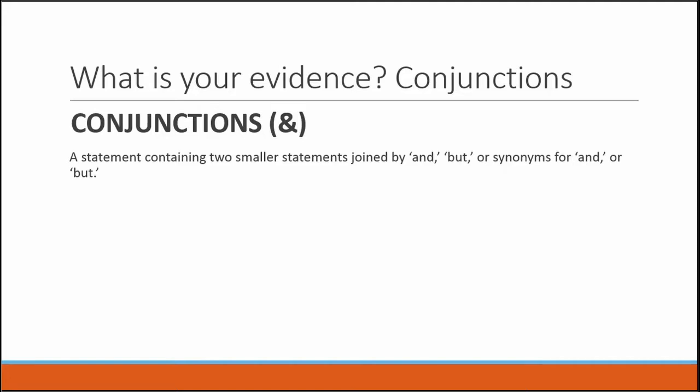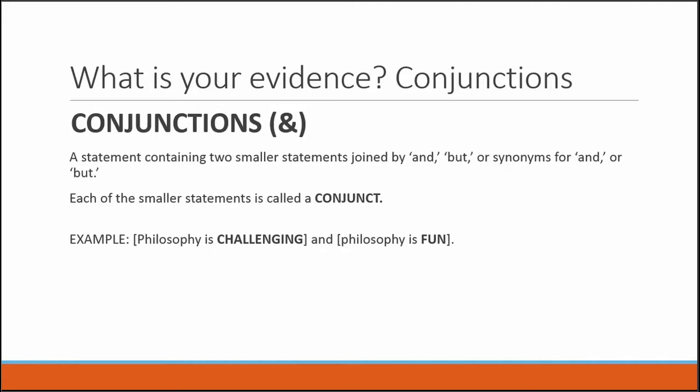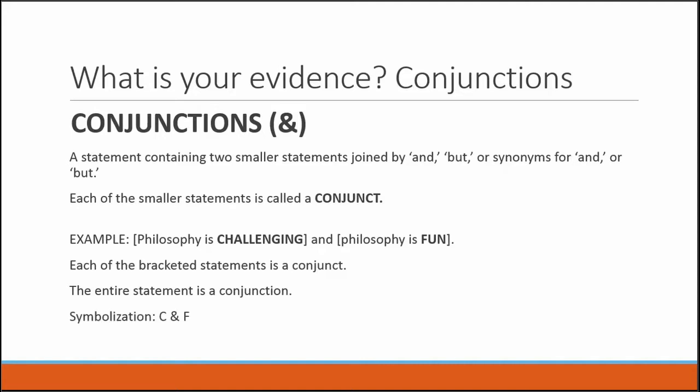In logic, the words 'and' and 'but' are equivalent — they're logically equivalent. Conjunctions assert both of the smaller statements. Each of the smaller statements is called a conjunct. Here's an example: 'Philosophy is challenging and philosophy is fun.' Two simple statements joined together by the logic word 'and.' Each of the smaller statements is a conjunct; the entire statement is a conjunction. We would symbolize this statement: C ampersand F.